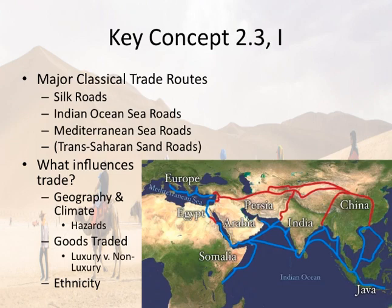What influences trade? Geography and climate certainly influence trade — for example, the Silk Road avoids certain areas because of deserts and mountains. The types of goods traded, whether luxury items or non-luxury items, is going to influence how trade is done and how effective it is. And who is trading also plays a big role, especially later on in the course.